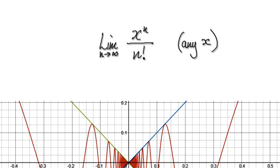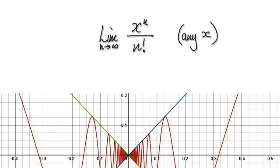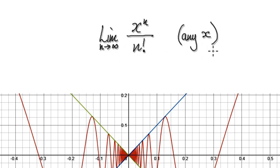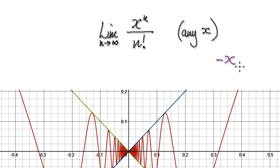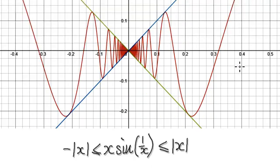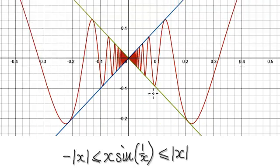Following on from some of the earlier videos, we are now in a position to be able to find the limit of this sequence as n tends to infinity for any given value of x. Now x could be a negative number, so if x is a negative number, we have to use this technique.